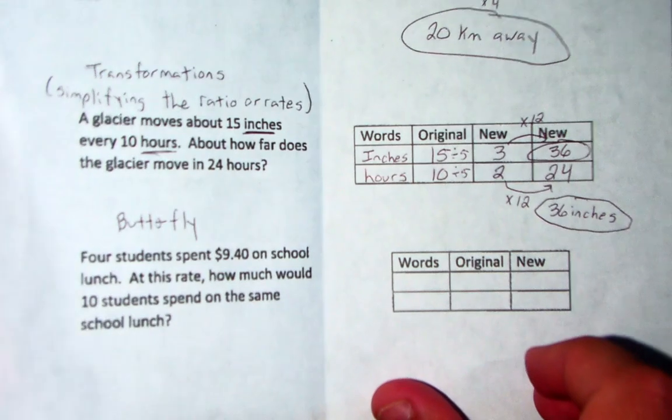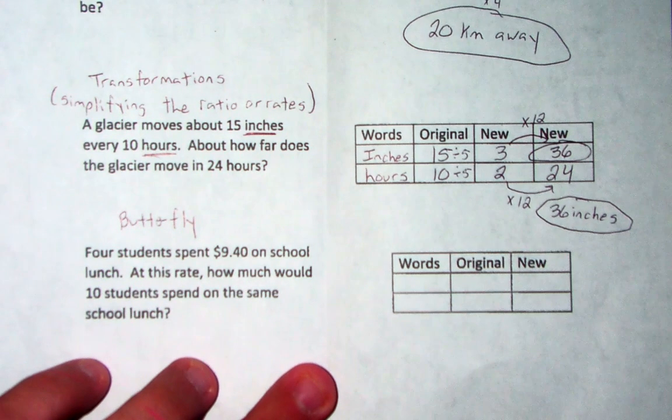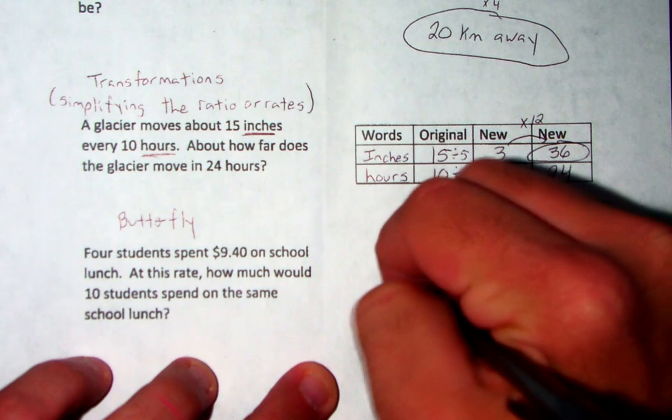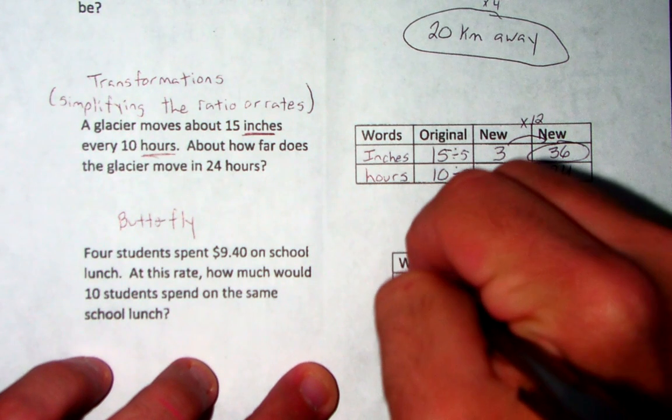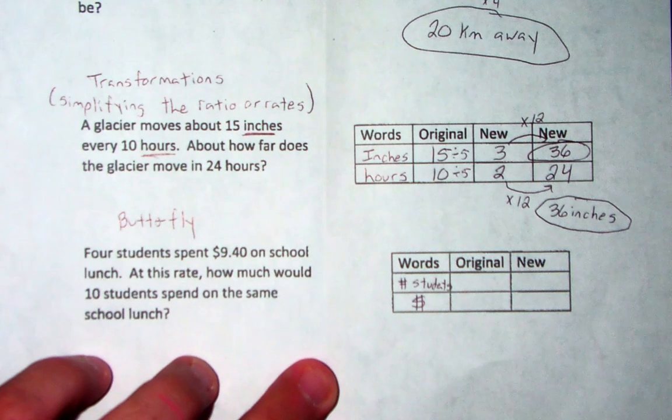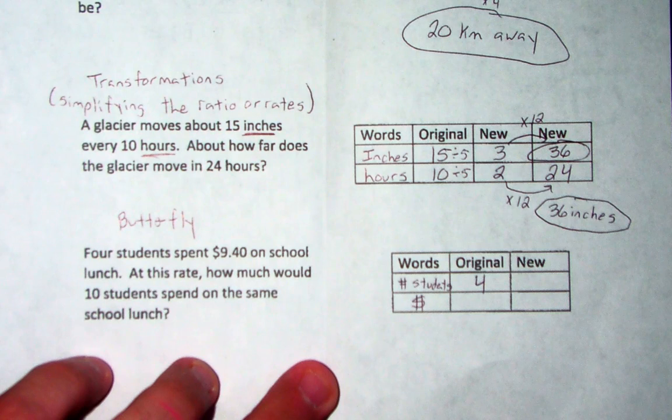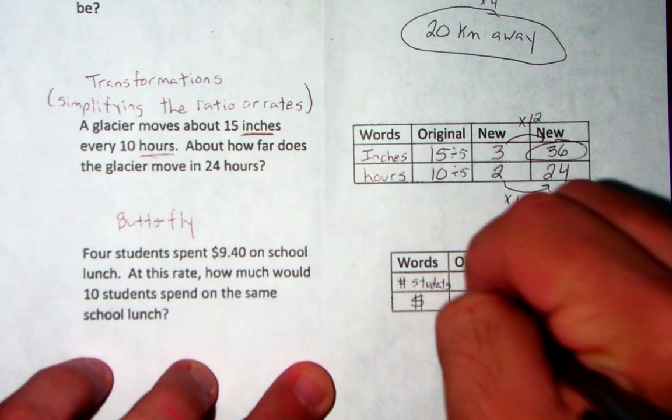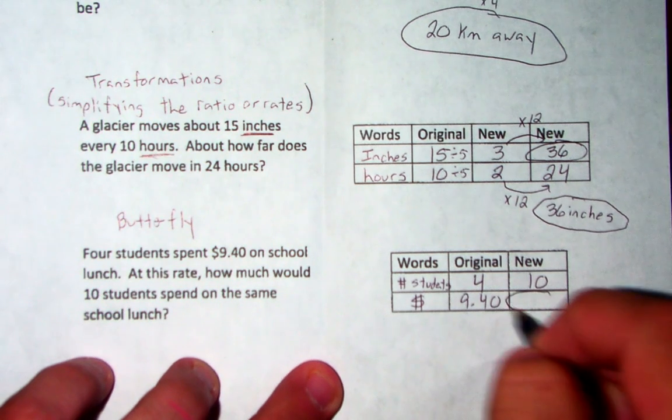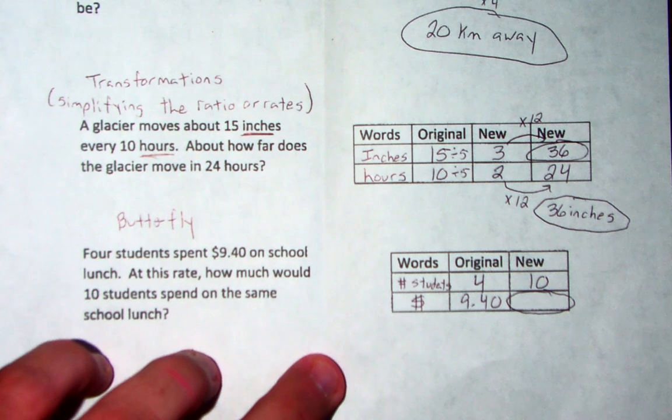4 students spent $9.40 on school lunch. At this rate, how much would 10 students spend on the same lunch? So here we are comparing the number of students versus money. So it tells us 4 students spent $9.40. Now if we have 10 students, how much would they spend? Alright. So here's where the butterfly method comes into play.